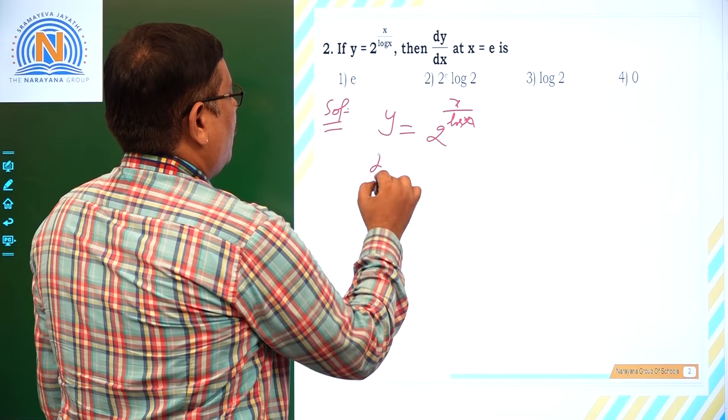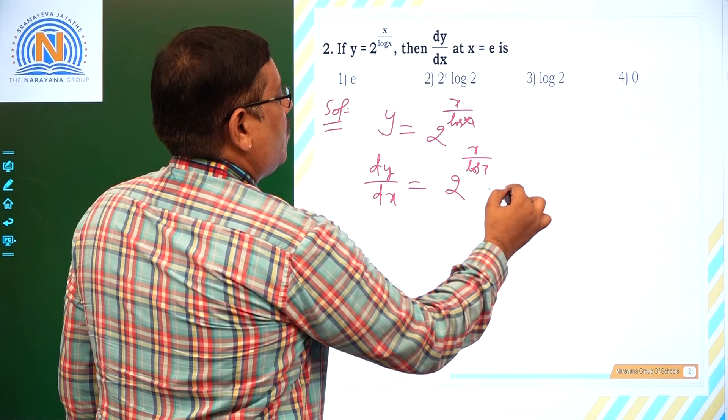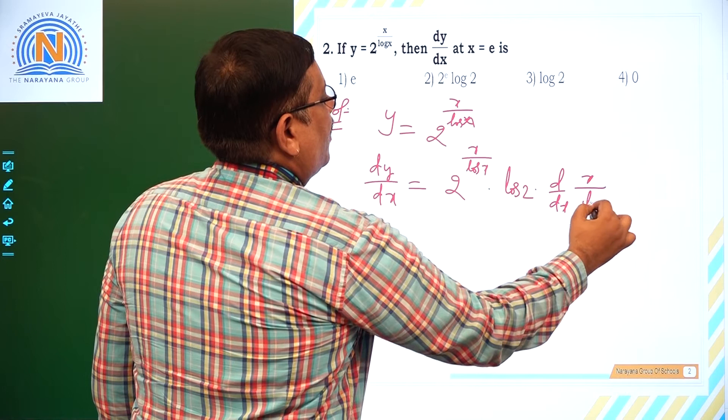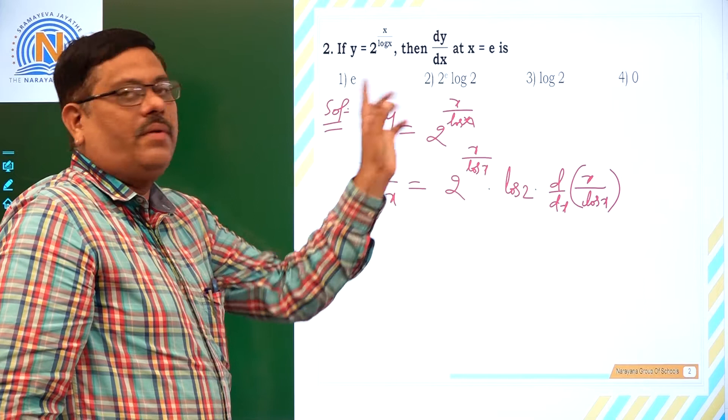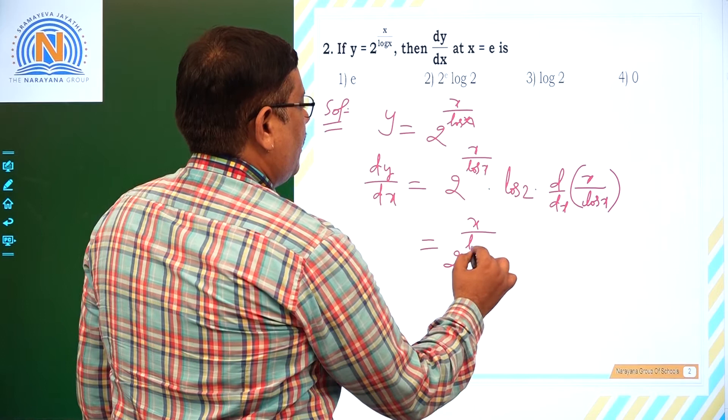dy/dx of this is 2^(x / log x) · log 2 · d/dx of (x / log x). We are applying the chain rule. First we differentiate 2^(x / log x) — the derivative of 2^(x / log x) is 2^(x / log x) · log 2. Then for the inner function d/dx(x / log x), it is in the form u/v, so we apply the quotient rule.